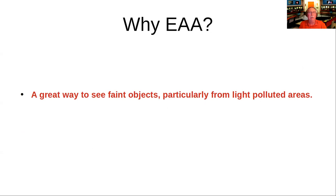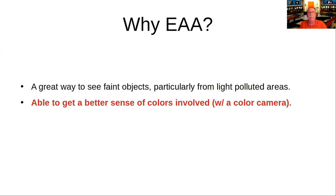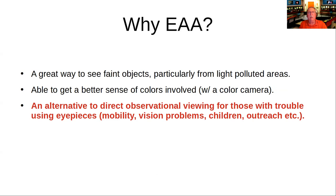Why do you use EAA? Well, it's a great way to see faint objects, particularly in light-polluted areas. I've read that it's like having a virtual aperture raising it about three times what you have, so your scope can remain lightweight and still have the effect of a large aperture. If you're using a color camera, it's a better way to see colors — cameras are much more sensitive than the human eye to the colors available in nebulae and other objects.